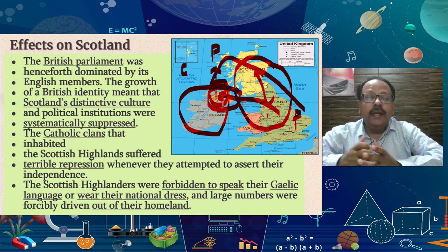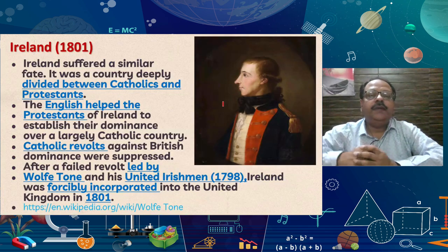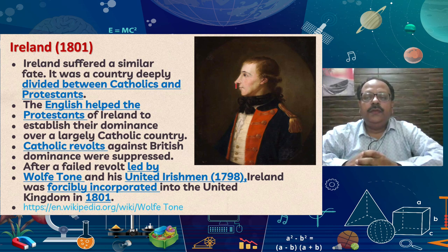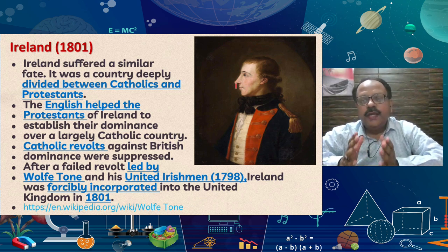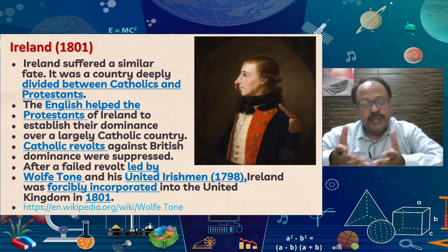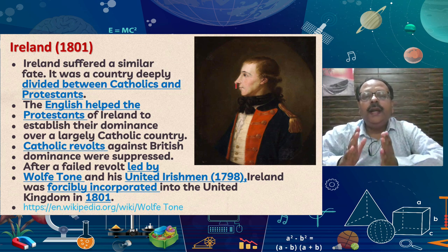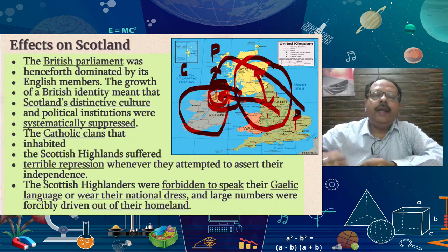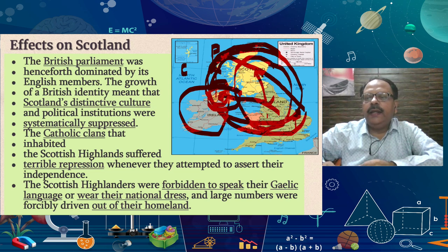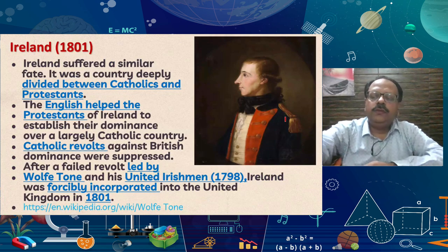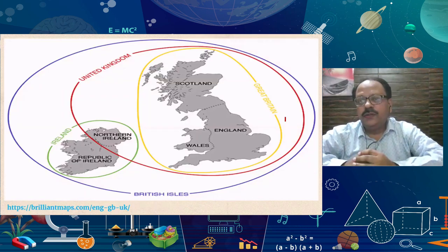England established its domination over Ireland. The Irish people protested against this domination of England. Many of their leaders protested — one of them was Wolf Tone. He formed the United Irishmen in 1798. In 1798, there was a revolt, but ultimately England suppressed that revolt. In 1801, this northern part of Ireland was formally dominated by England. In this way, the process of unification of Britain was completed.